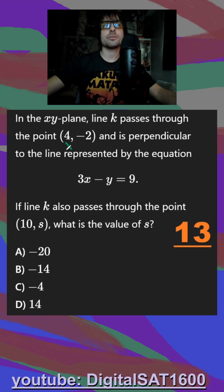I see line k passes through this x, y point and is perpendicular to this line. So I say we start with putting this in slope-intercept form. I add y minus 9, and I get y equals 3x minus 9.